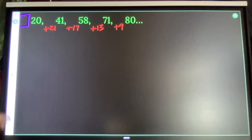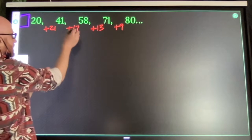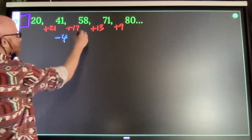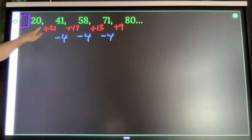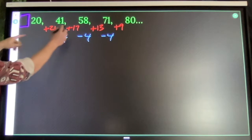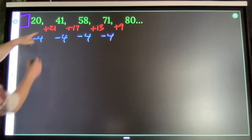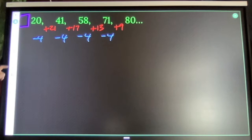Second difference is minus 4. That's my second difference sequence. So, before I added 21, I added 25.